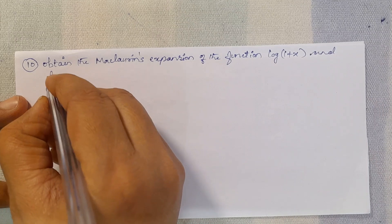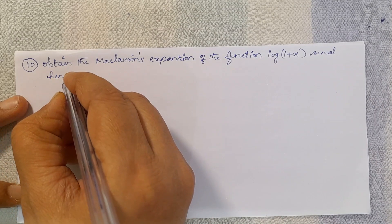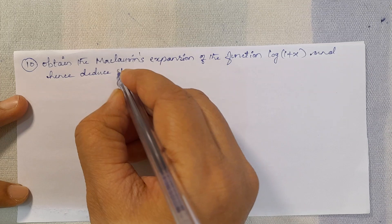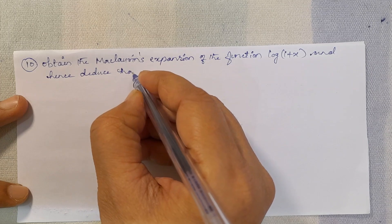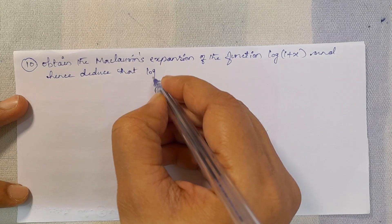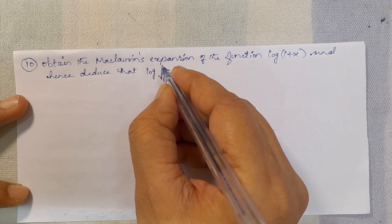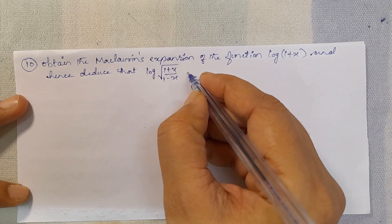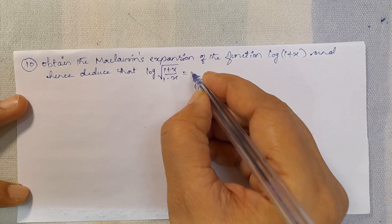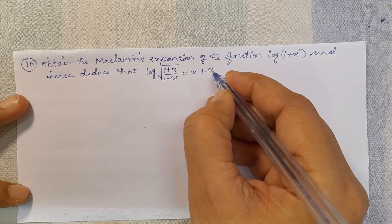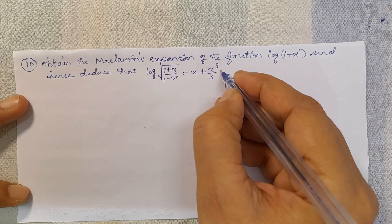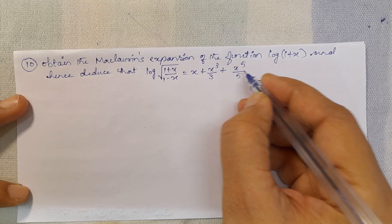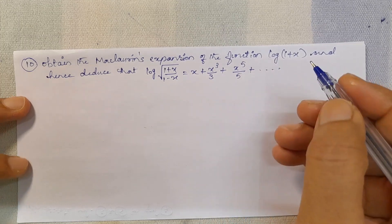And hence, deduce that log of the square root of (1 + x) divided by (1 - x) equals x plus x cubed divided by 3 plus x to the fifth divided by 5, plus etc.